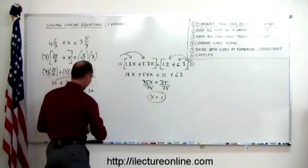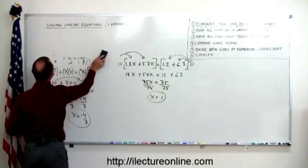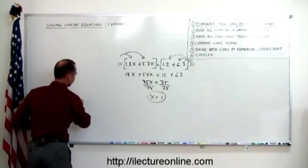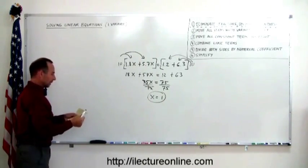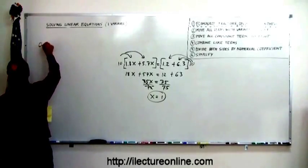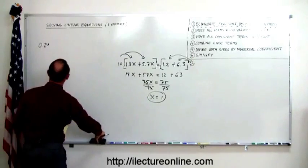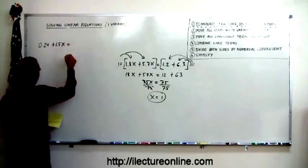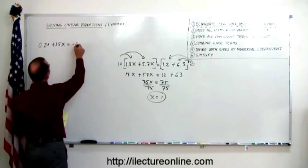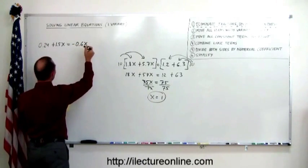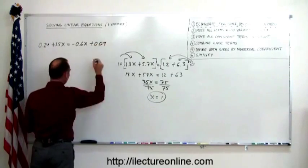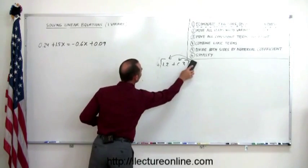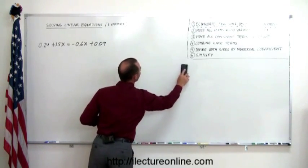Let's do one where not all the numbers have just one decimal place. Let's see how we handle that. How about this problem? 0.24. Read that little dot there so we don't get confused. Plus 1.5x equals minus 0.6x. That's what I have. Plus 0.09. Let me get rid of this number, this problem right here, so we're not cramped too tightly. It's cleaner.